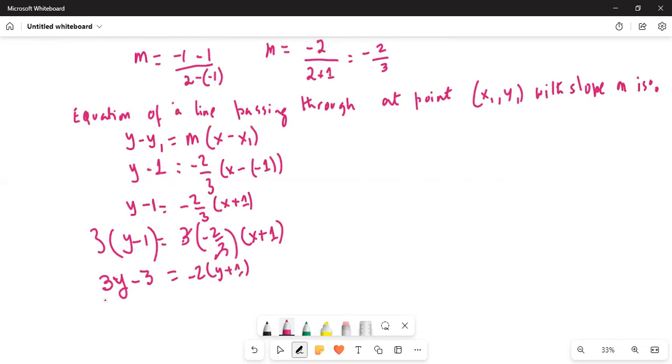Now I'll distribute the -2. So 3y minus 3 equals -2x - sorry, this is x, my mistake. So this is x actually.